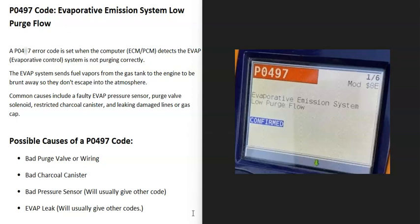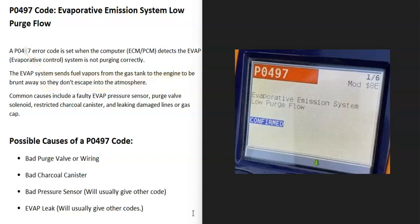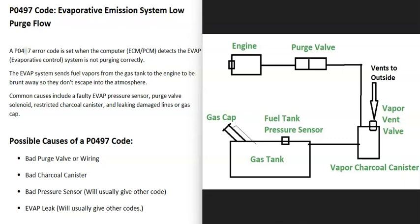Today I'm talking about a P0497 code — what it is and how you go about fixing it. A P0497 is an evaporative emission system low purge flow. Basically, vehicles have what's called an EVAP system that takes all the gas vapors from the gas tank and sends them up to the engine to get burnt off so they don't escape into the atmosphere. This is for emissions. When you get a P0497 code, the computer is seeing some kind of problem — mainly that when it goes to purge the gas vapors into the engine, the flow is not correct. It's got to be troubleshot to know why.